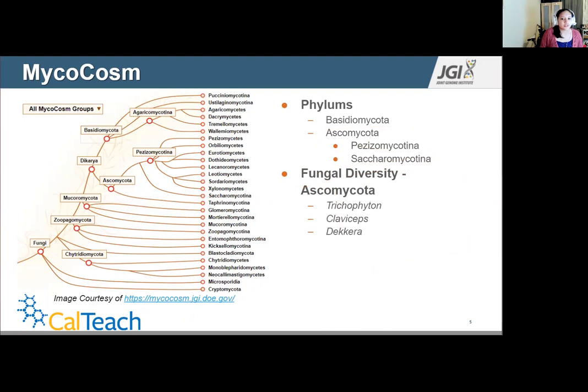There's also diversities in species within a genus. Both Trichophyton, Claviceps, and Dekkera are all part of Ascomycota. Trichophyton is a genus that causes athlete's foot or even ringworm. Meanwhile, Claviceps is a fungus that grows on rye and when consumed can lead to hallucinations. Then we have Dekkera, which is a yeast that is sometimes used to make beer and wine.